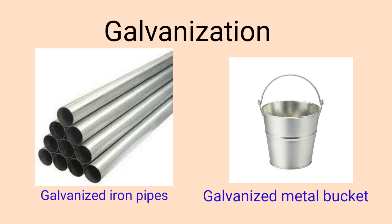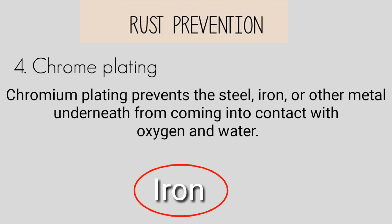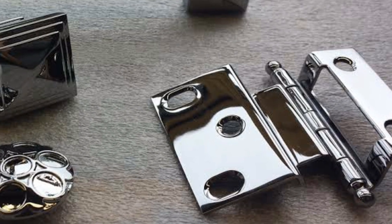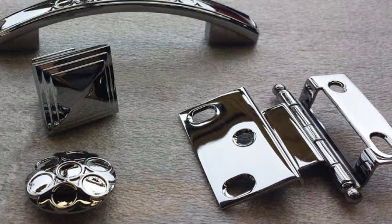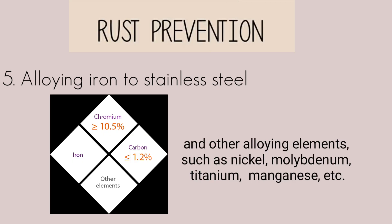The fourth method is chrome plating, where iron is coated with chromium. Chromium is a metal that is resistant to the action of air and moisture, so it prevents rusting. This is generally done on steel furniture, taps, and bicycle handles.